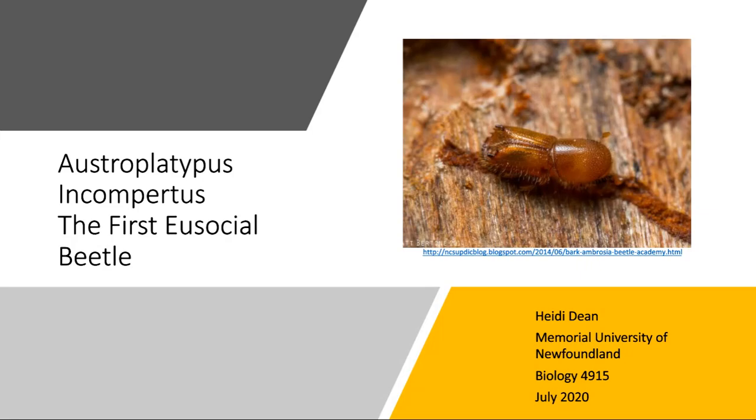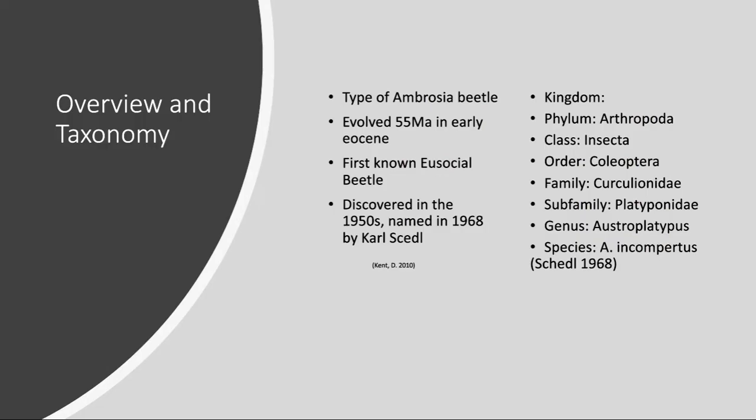Today we are going to talk about Austroplatypus incompertus, which is the first eusocial beetle. Austroplatypus incompertus is a type of ambrosia beetle. It is thought to have evolved in the early Eocene and is the first known eusocial beetle. It was discovered in the 1950s and was named by Carl Skedd in 1968.